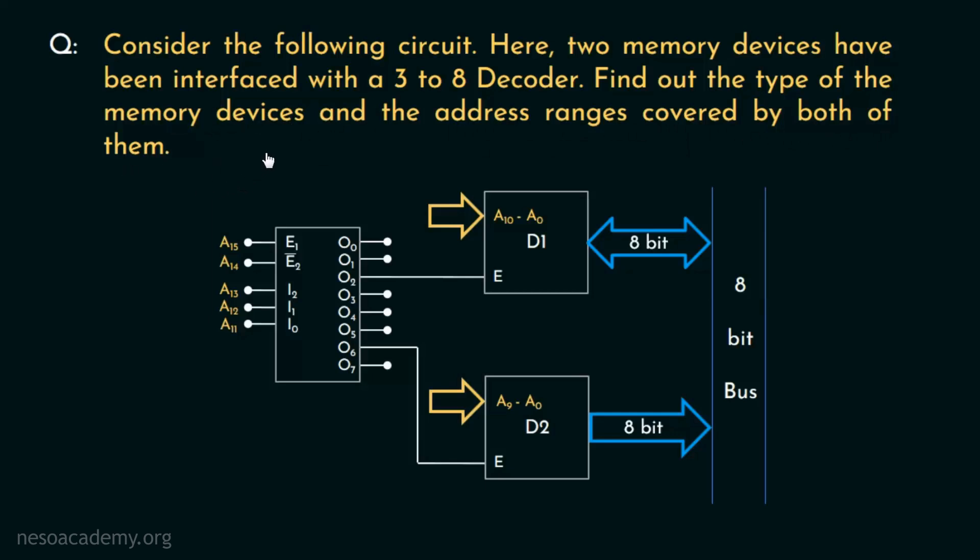This particular question will test our knowledge which we have cumulatively acquired during our discussion of the various types of primary memories. Alright then, let's try to solve it. First things first, we are to find out the type of memory devices. Let's consider D1 first, shall we?